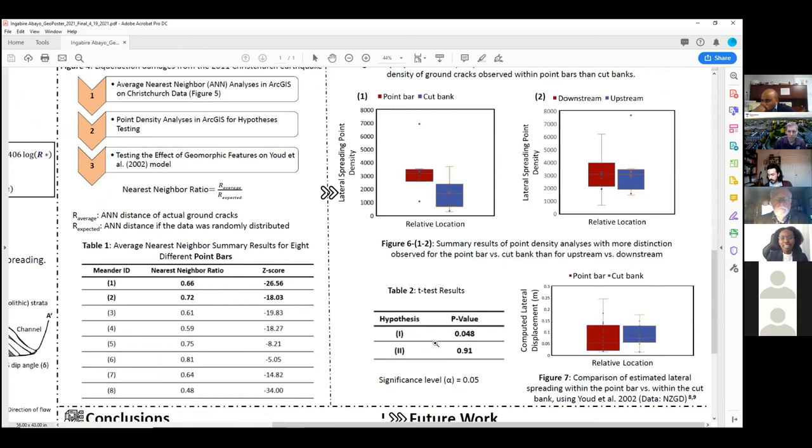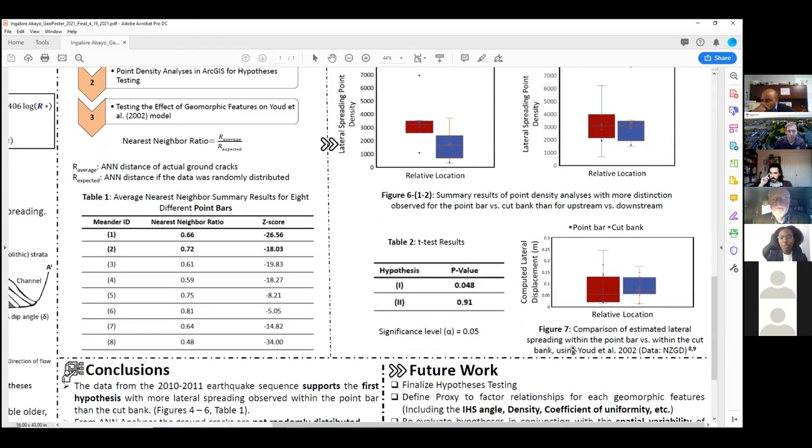Since the observed values support the first hypothesis, we estimated lateral spreading using the Youd et al. model for locations inside and outside of a meander bend, but we found that the model does not suggest any significant difference, as shown here in figure 7. So our next steps include finalizing hypothesis testing, the ones we just discussed, and more. And then once this is done, we can define proxy factors that can help us improve our predictive models. Thank you.